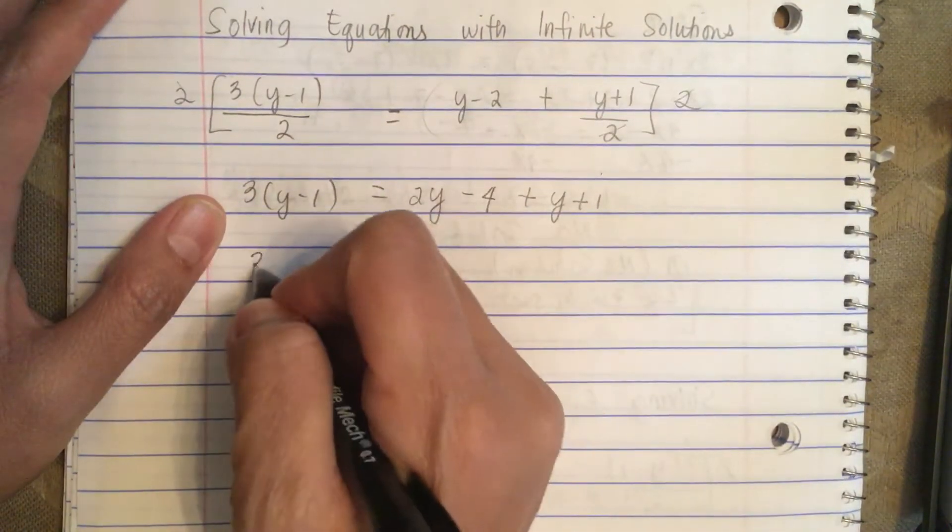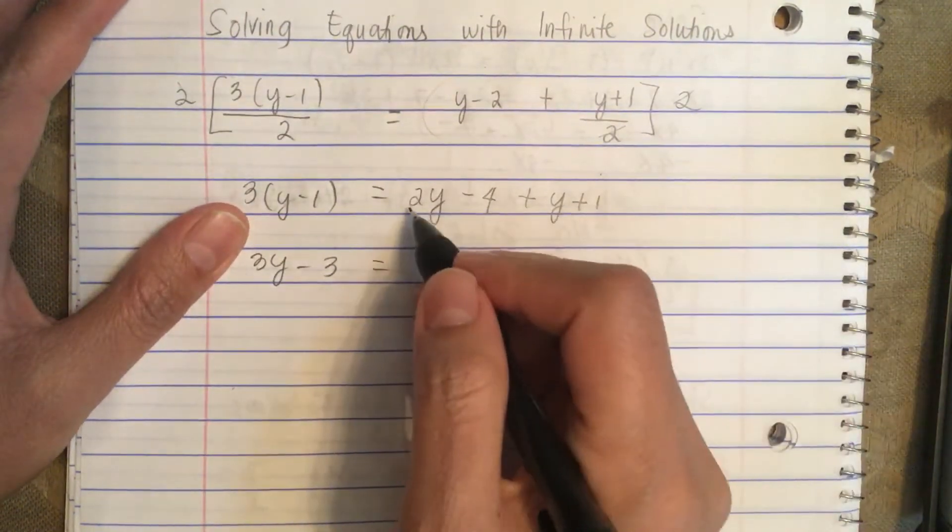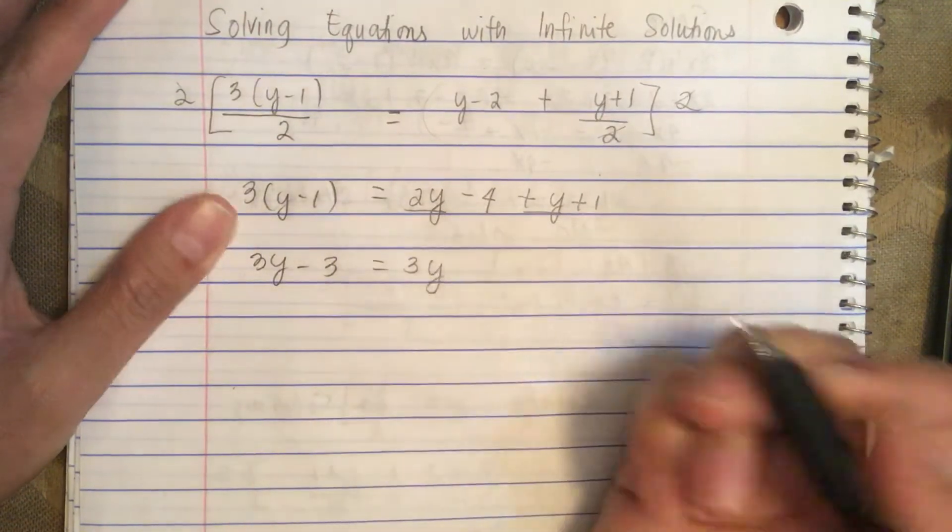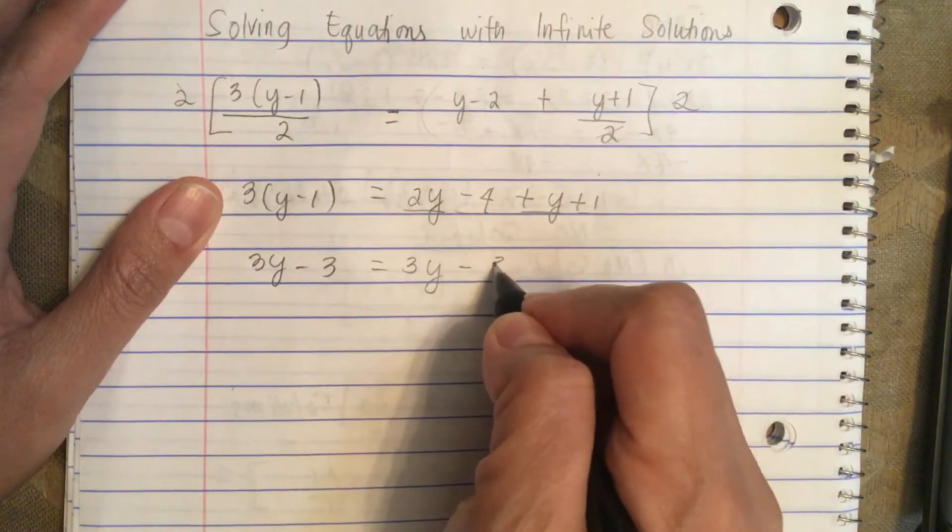So we have 3y-3 equals, we have 2y and y for a net of 3y. Now we have -4 and +1 for a net of -3.